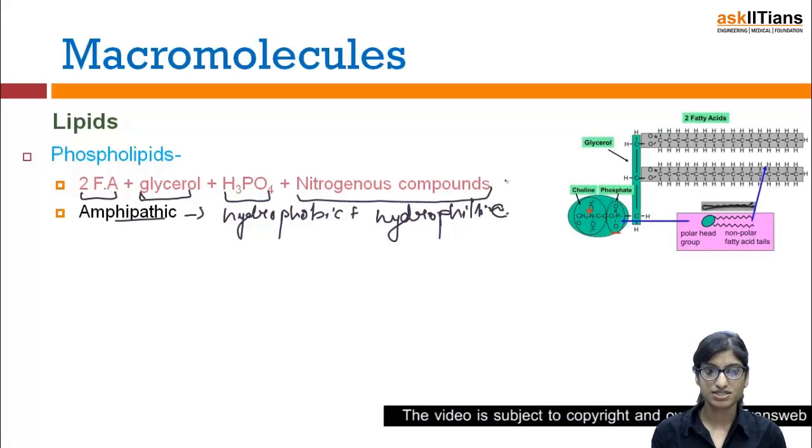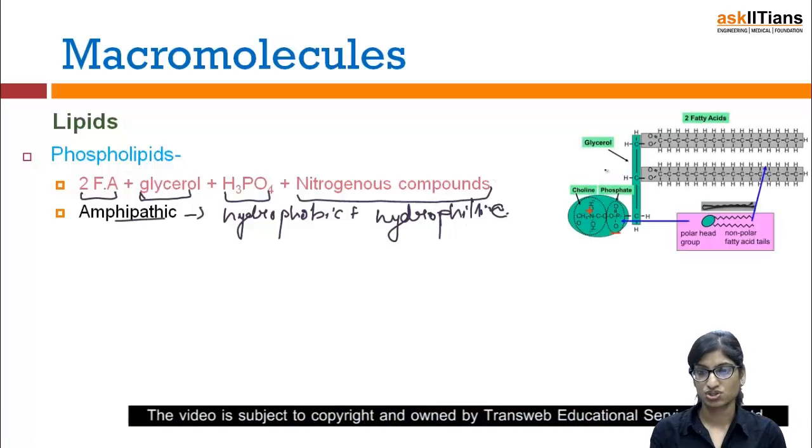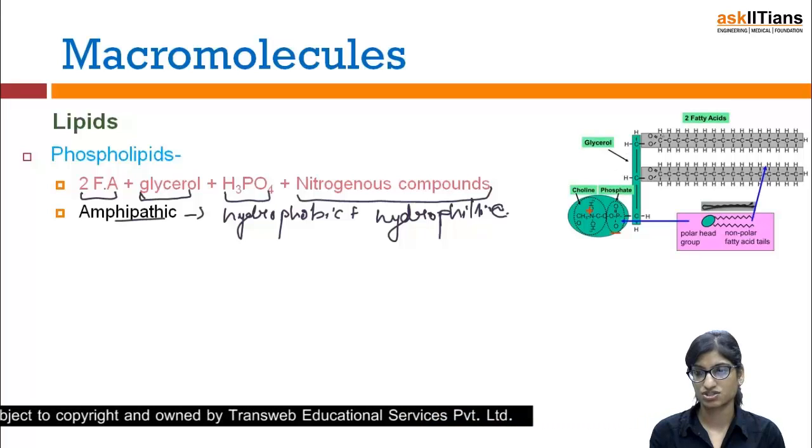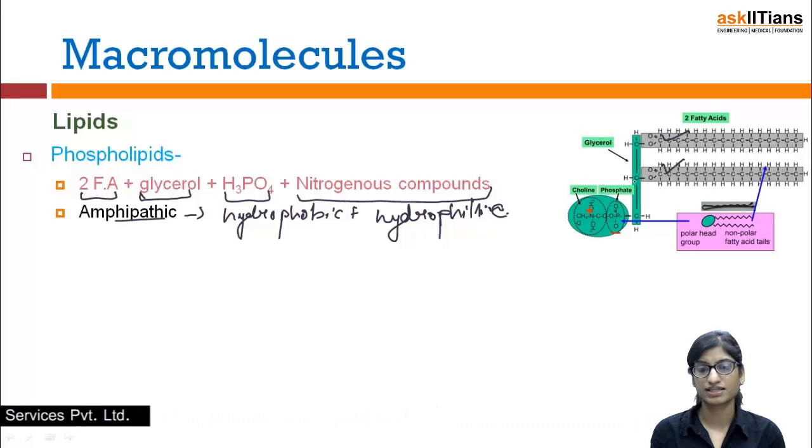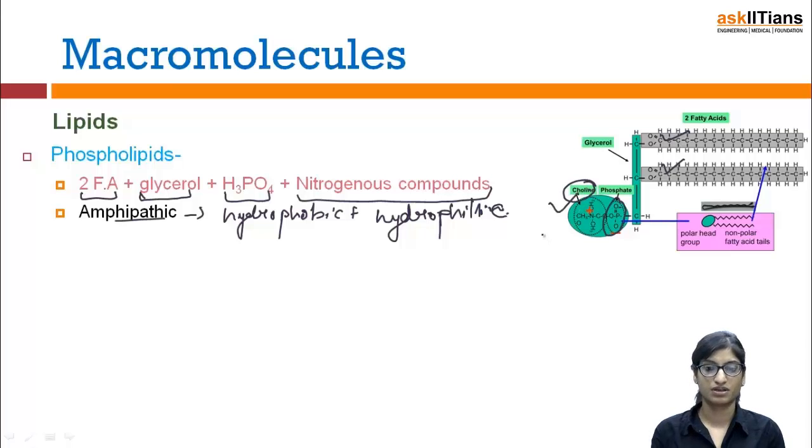This is the structure of a phospholipid: two fatty acids plus one glycerol—this dark green is glycerol—then the phosphoric group, phosphate group here, and then the nitrogenous compound choline shown here. This is the nitrogenous compound. Which compound is this? We are going to learn types of phospholipids.